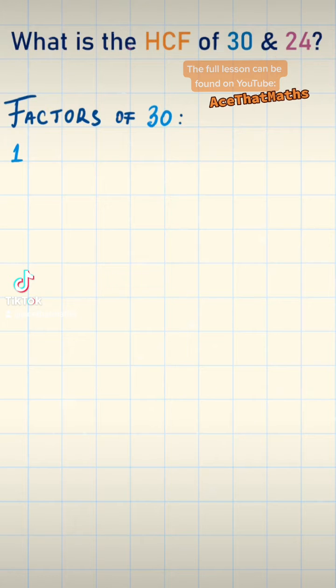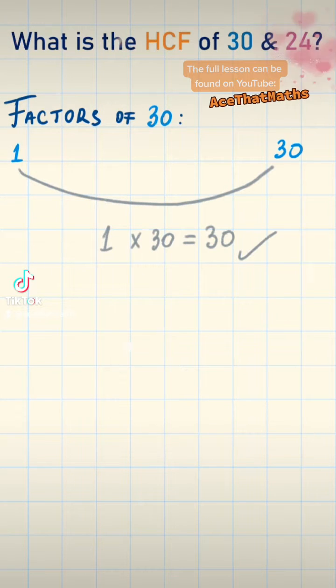Start with 1. 1 multiplied by what to make 30? 1 times 30. So the first factor pair is 1 and 30, because 1 times 30 equals 30.